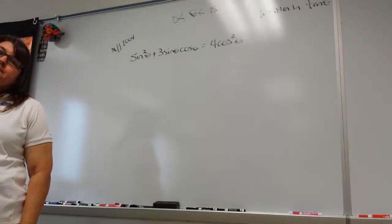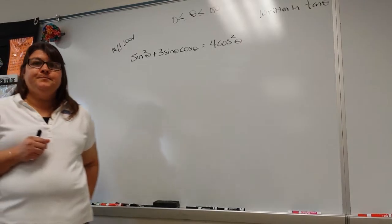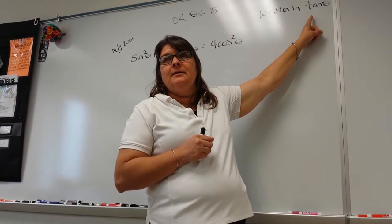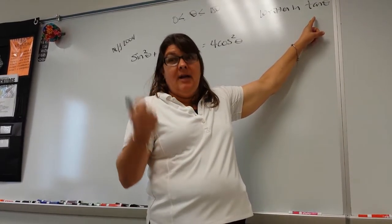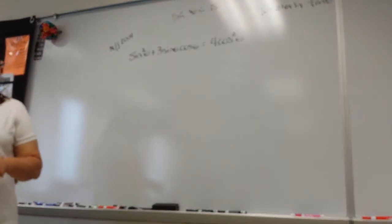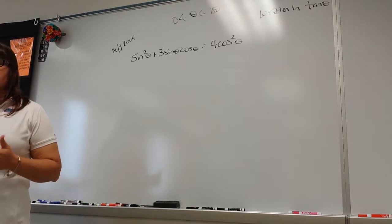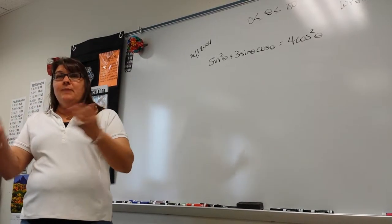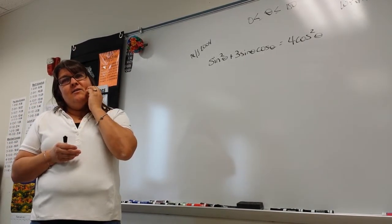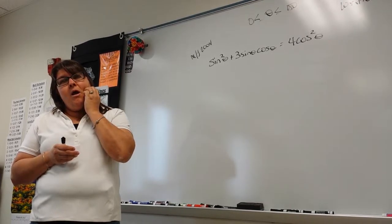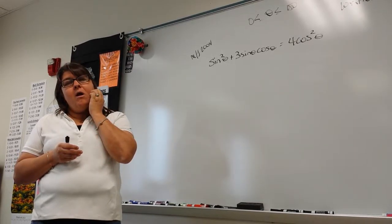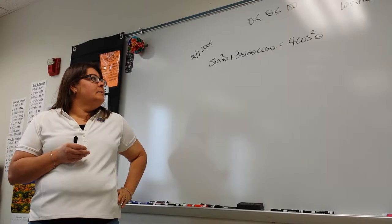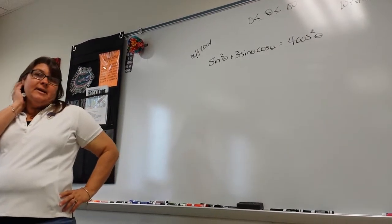Student: So how do you know which Pythagorean identity to look at? Because you could either do sine squared or cosine squared. Teacher: You ultimately want sine over cosine because it is tangent. In a normal situation, if they're not asking for tangent, you'd start converting one into the other and combining like terms. But if you change cosine squared into one minus sine squared, you'd still have sine over cosine on the left side.